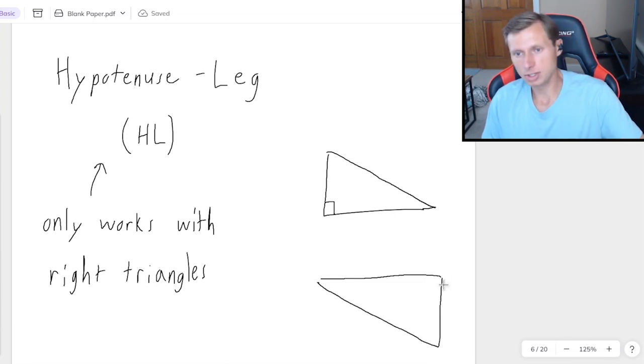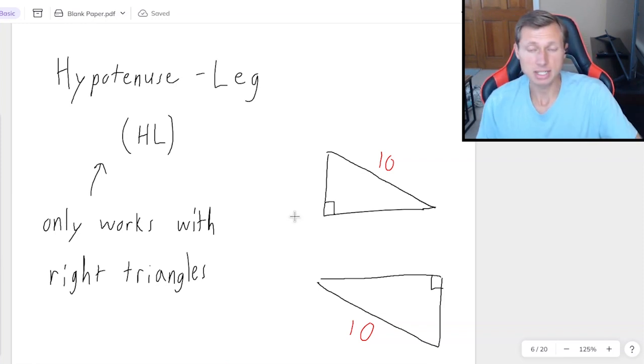But let's say I have these two triangles here. They're both right triangles, as you can see. And I need the hypotenuses to match. So maybe that's like 10 here and 10 here for the hypotenuse. Remember, the hypotenuse is always the longest side, and it's across from the right angle. And then leg. It doesn't matter which leg it is. It just has to be one of them. So for instance, maybe I say this leg is six, and this leg is six. And that's all I need to prove that the two triangles are congruent.